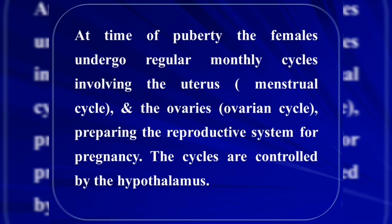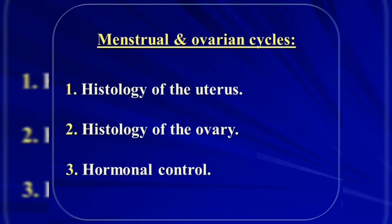Both the menstrual and ovarian cycles are controlled by hormones secreted from the hypothalamus.